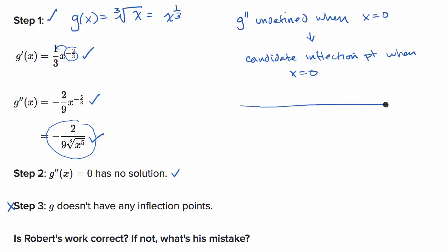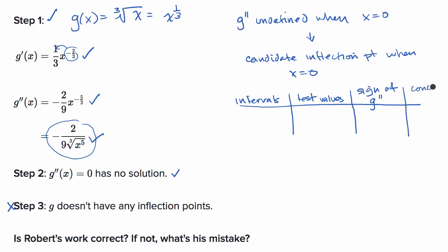We can set up a traditional sign chart with our intervals: negative infinity to zero, and zero to infinity. We'll use test values of negative one and one. We have to be careful to ensure nothing unusual happens between these test values and the candidate inflection point. We'll evaluate the sign of g double prime and then determine the concavity of g.